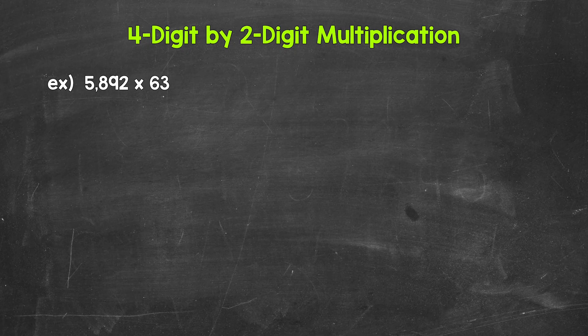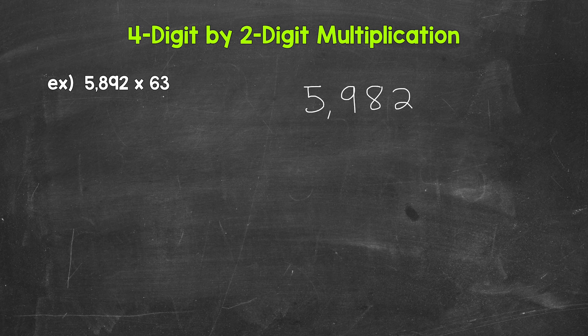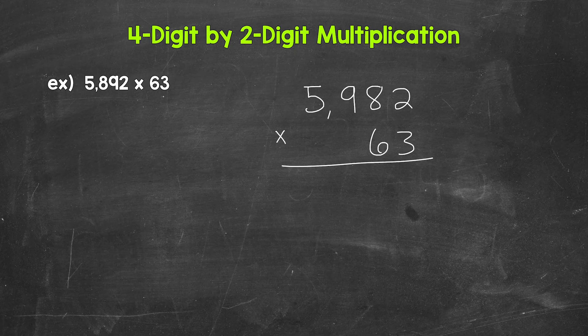Let's jump into our example, where we have 5,892 times 63. The first thing we're going to do is set this up — line up the places. So 5,982 times 63. You can see that we have the ones place lined up, the 2 and the 3, then the tens place lined up, the 8 and the 6. The four-digit number on top has a 9 in the hundreds and a 5 in the thousands. Now that we're lined up, we're ready to multiply. What we're going to be doing is 5,982 times 3, and then 5,982 times 60 — I'm saying 60 because that 6 is in the tens place, it has a value of 60. Then we add those results for our final answer.